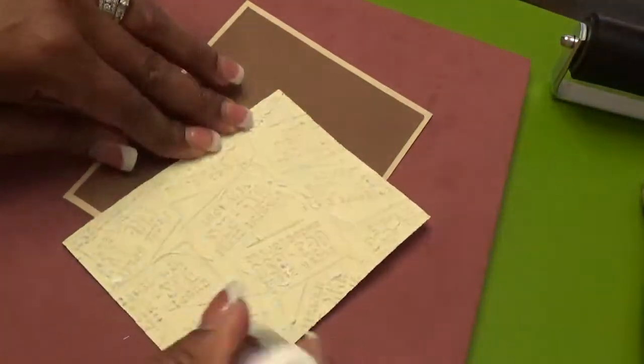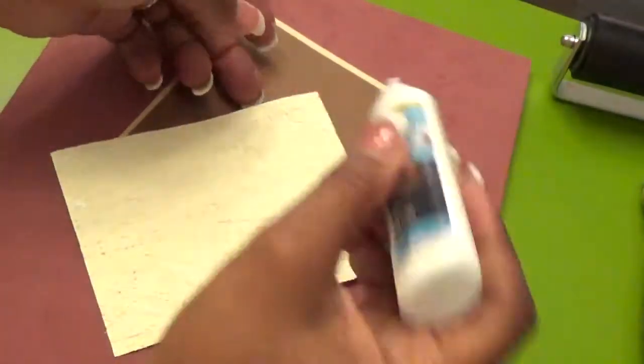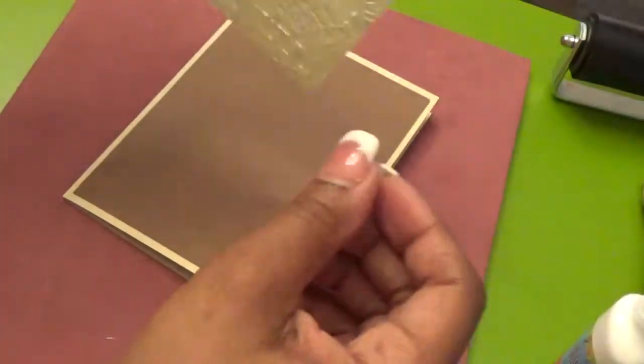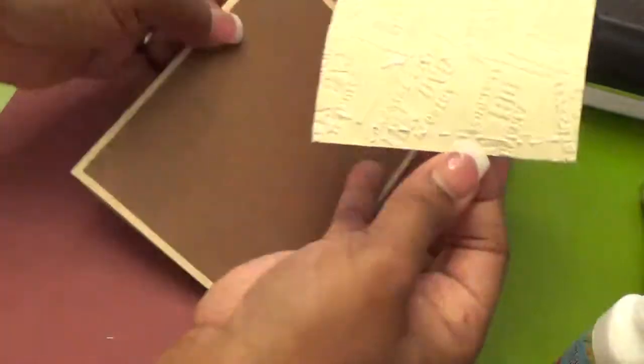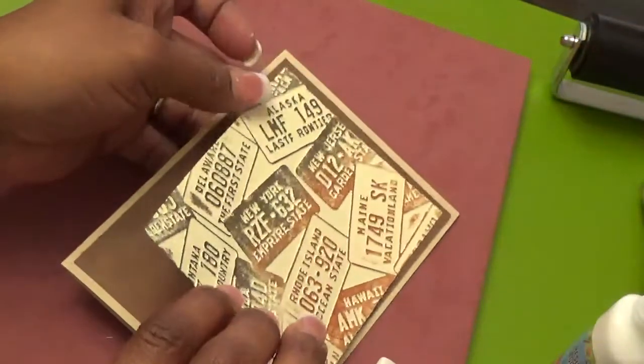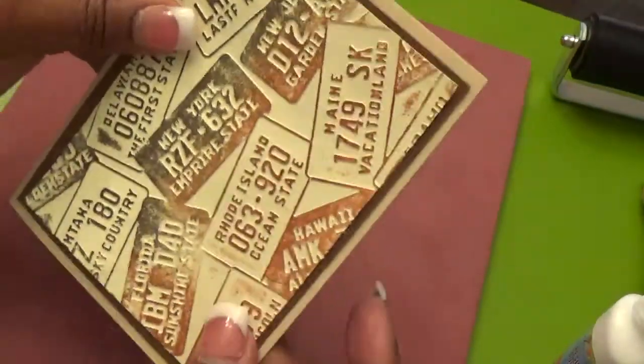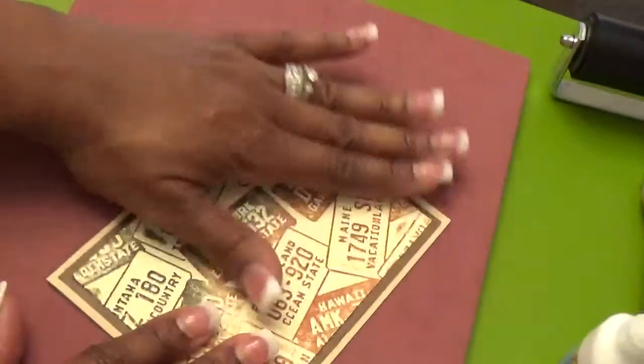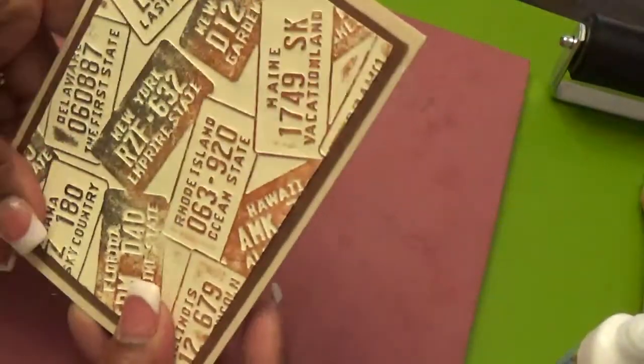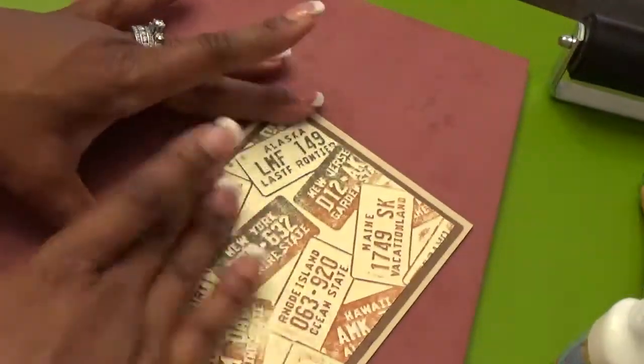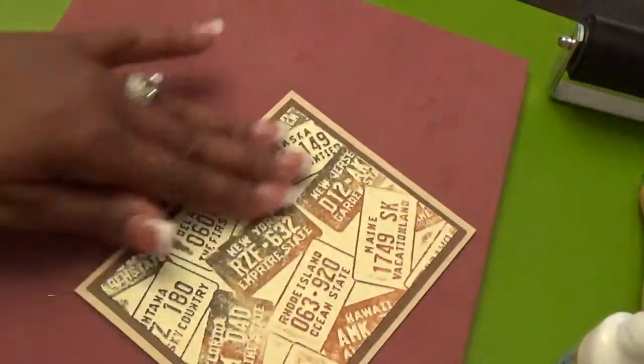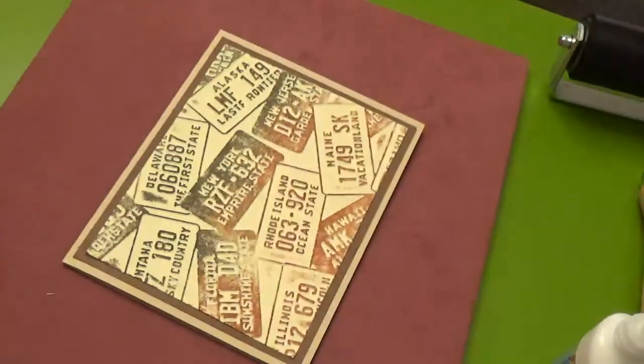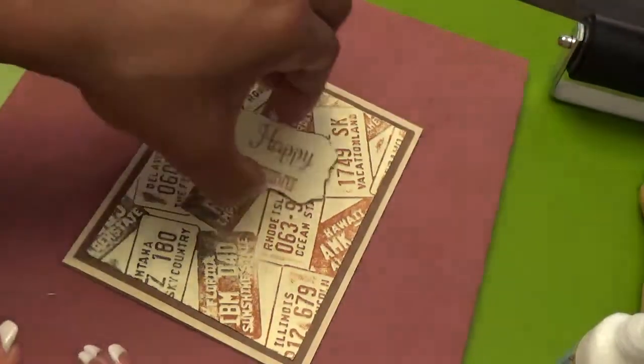And again, I love wet glue because I need that little time. The Dollar Tree glue, I believe it dries clear as well. So, love it. There we go.